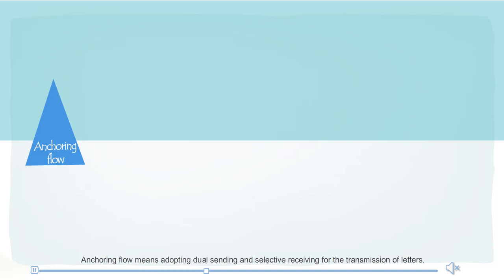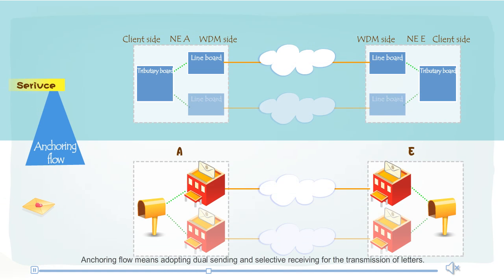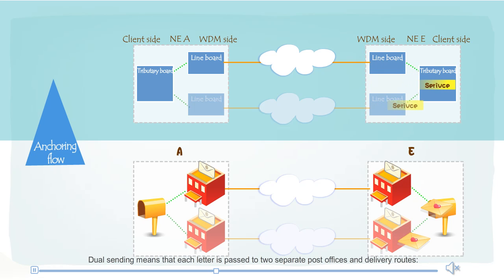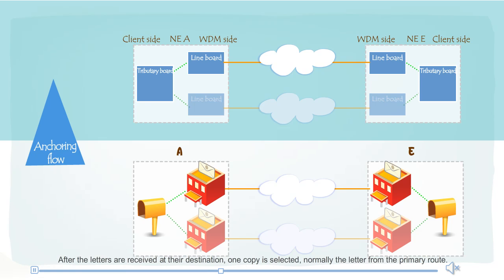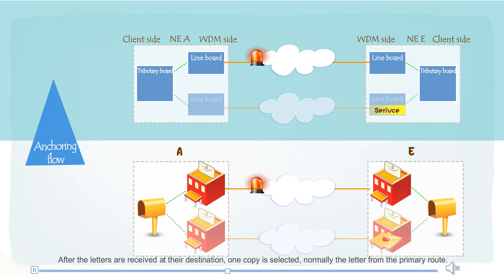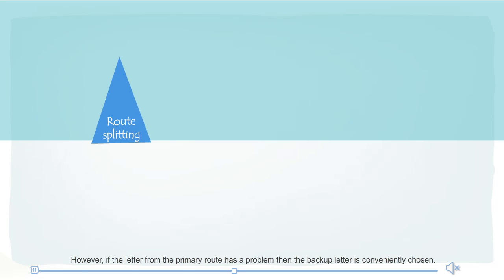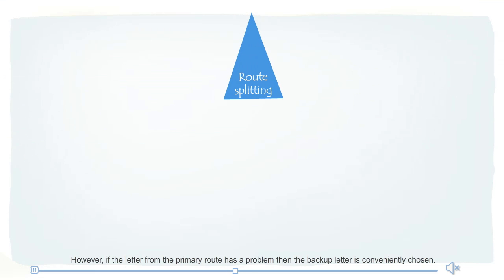Anchoring flow means adopting dual sending and selective receiving for the transmission of letters. Dual sending means that each letter is passed to two separate host offices and delivery routes: a primary route and a backup route. After the letters are received at their destination, one copy is selected — normally the letter from the primary route. However, if the letter from the primary route has a problem, then the backup letter is chosen.